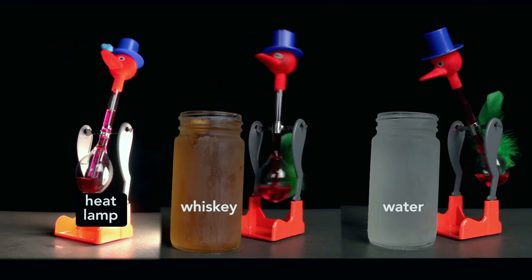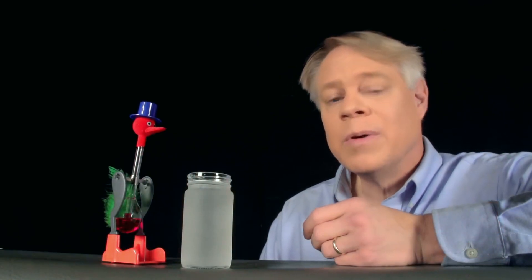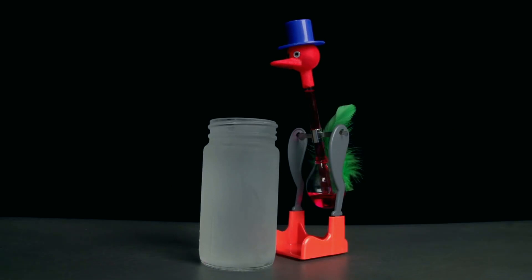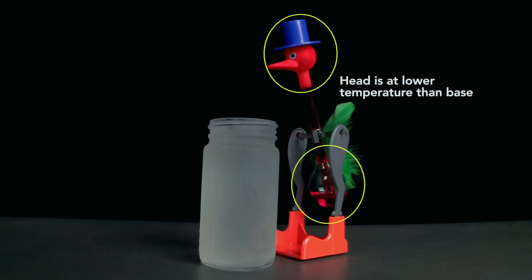The heat lamp causes the greatest difference of all, which highlights how an engineer thinks about this bird. To an engineer, this bird is a heat engine. A heat engine turns heat differences into work, mechanical motion. To see that, recall that when the bird is just about to drink, that its head is at a lower temperature than its base, which is at ambient temperature.